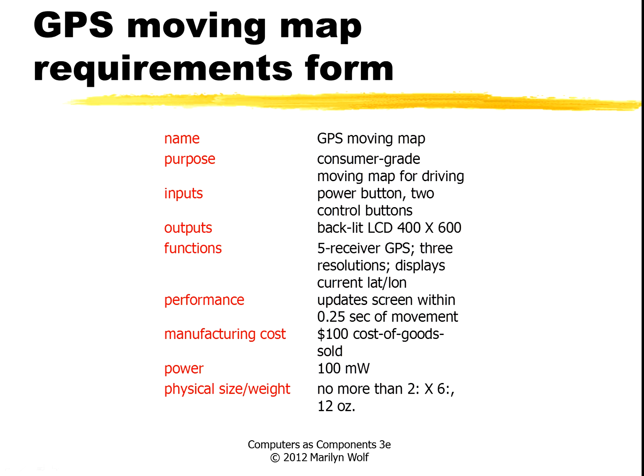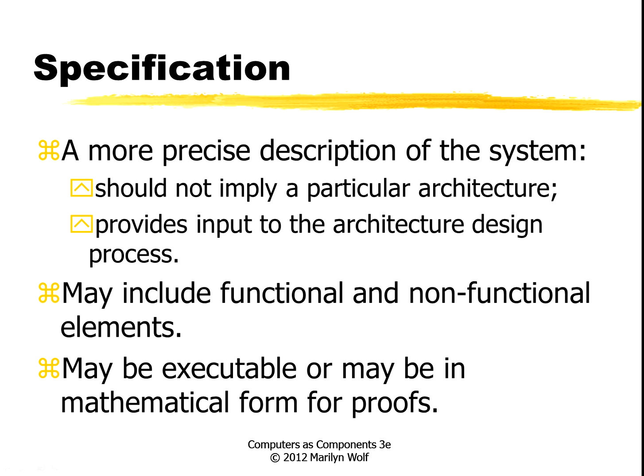We can fill this into our requirements form — a very simple form with very simple information, but it gives you good information for the next step, which is specification. We want to describe what the system is supposed to do without nailing down too many details of the architecture, so that the architecture team knows what they need to do without dictating too many of the low-level details. The specification can include both functional input-output relationships and non-functional elements. It could be in plain English, in an executable form, or for more sophisticated designs, a more mathematical specification of the system.